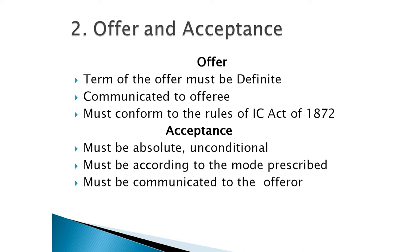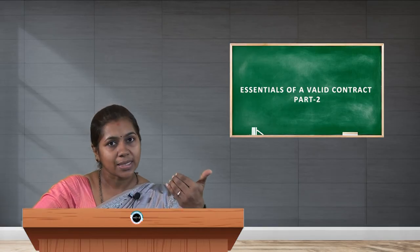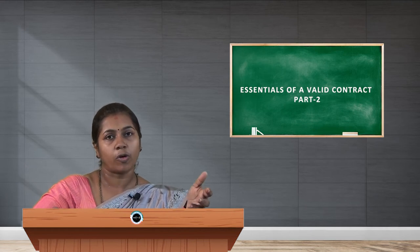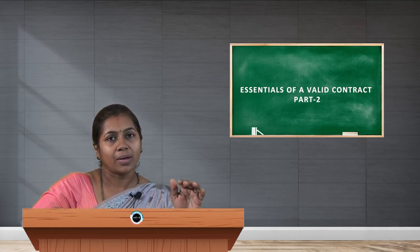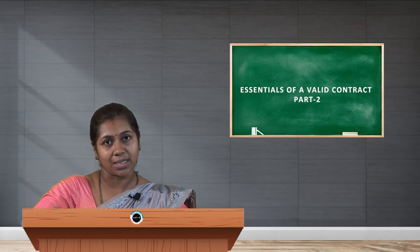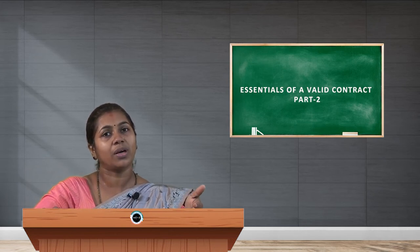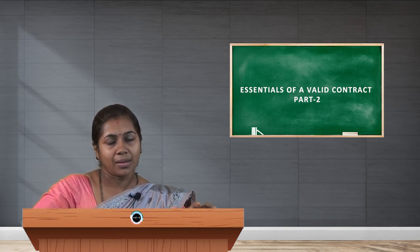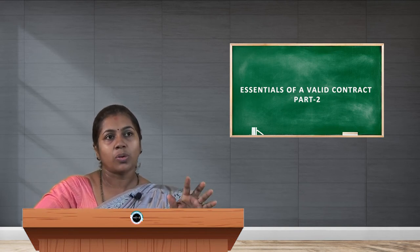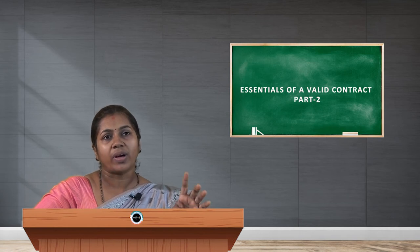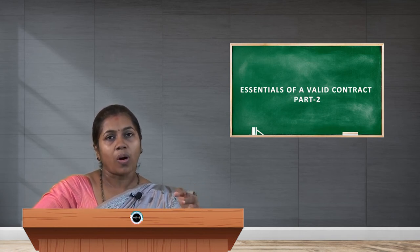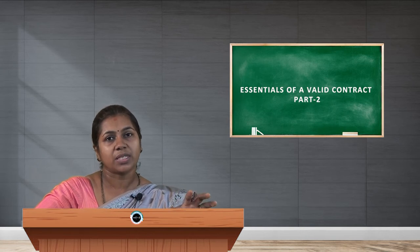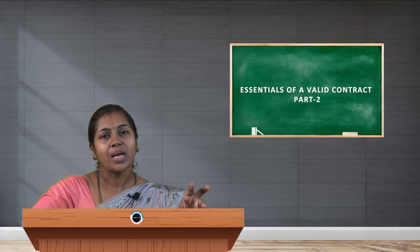Acceptance must be communicated to the offerer in the prescribed manner. For example, if X wants to sell his bike to Y for rupees 20,000, Y has to accept as it is. If Y gives a cross offer, it is not valid under the Contract Act. There must be a valid offer and acceptance following all terms and conditions mentioned in the Indian Contract Act of 1872.